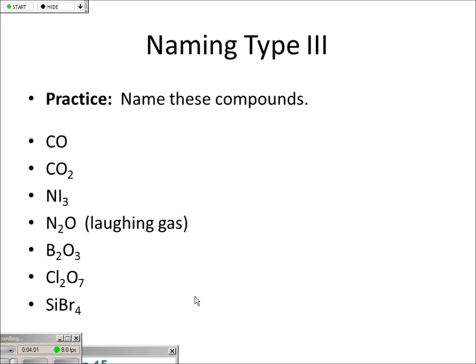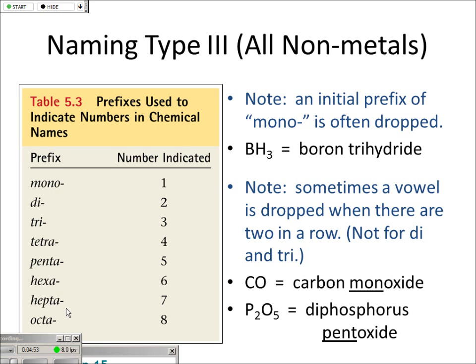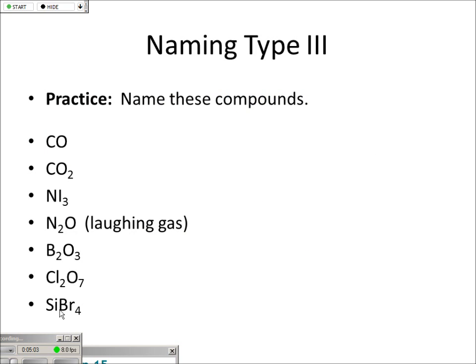Let me try to name these compounds. For 1C and 1O, it's carbon monoxide — not monocarbon monoxide, just carbon monoxide, because I don't put mono in front of the first element. For CO2, that's carbon dioxide, the greenhouse gas everyone's worried about, including me. Nitrogen triiodide. Dinitrogen monoxide. Diboron trioxide. Dichlorine heptoxide. Silicon tetrabromide.